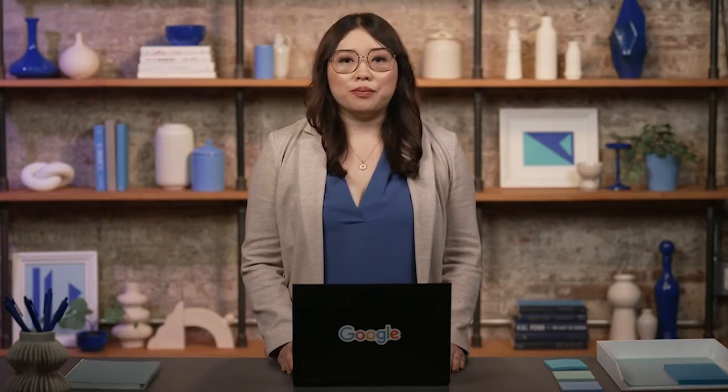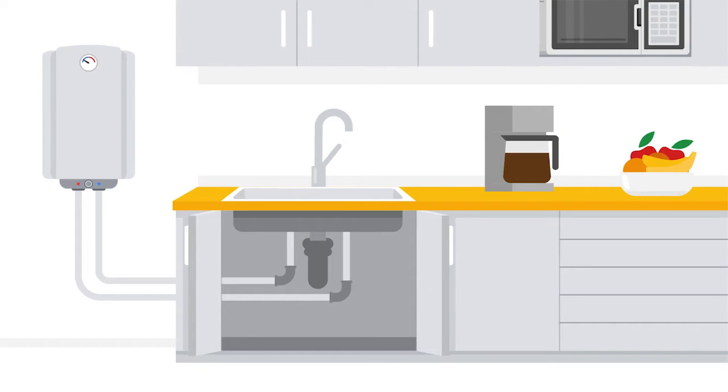Now let's talk about piping. The piping command sends the standard output of one command as standard input into another command for further processing. It's represented by the vertical bar character — the pipe character. Take a moment and imagine a physical pipe: on one end, water might enter from a hot water tank, then it travels through the pipe and comes out on the other end in a sink. Similarly, in Linux, piping involves redirection — output from one command is sent through the pipe and then used on the other side. Grep can also be incorporated after a pipe.